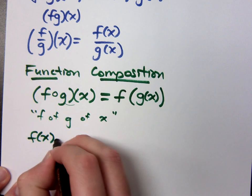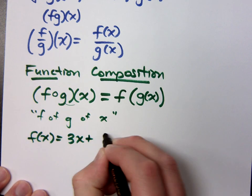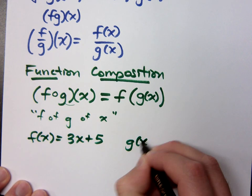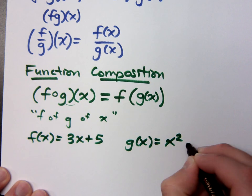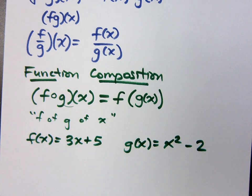But if I just said f of x equals 3x plus 5, and g of x equals x squared minus 2. If I just say that, and then I ask you to do this.